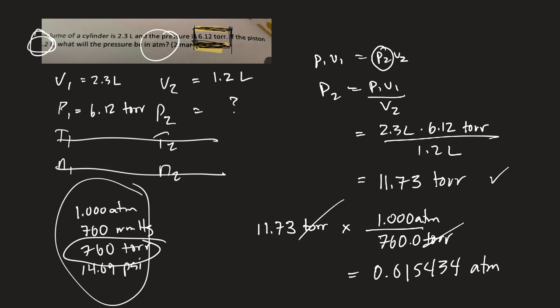So, if I guess the right number there, this would be my answer. I would want sig figs though. Looks like I have two sig figs, so it would be 0.015 atmospheres.